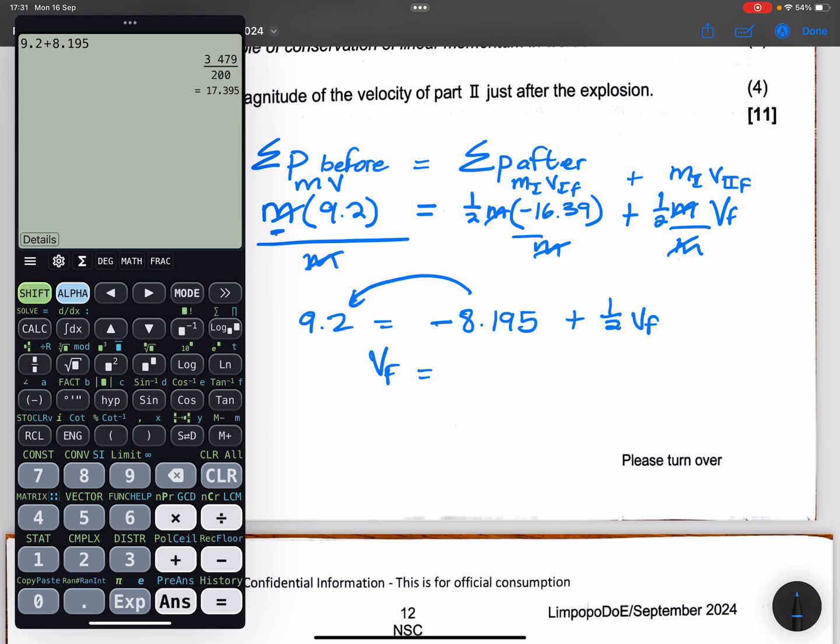We get 17, and we're going to multiply that by 2, so vf.